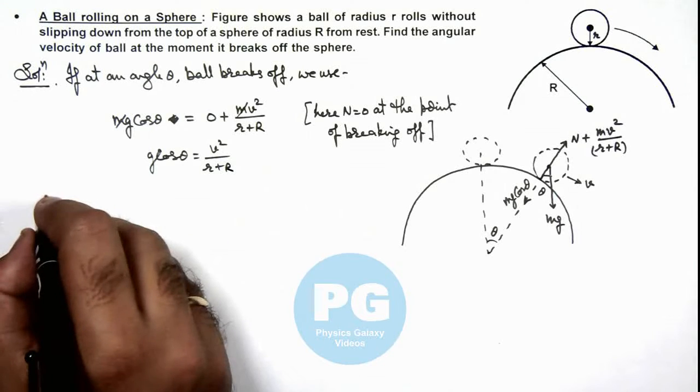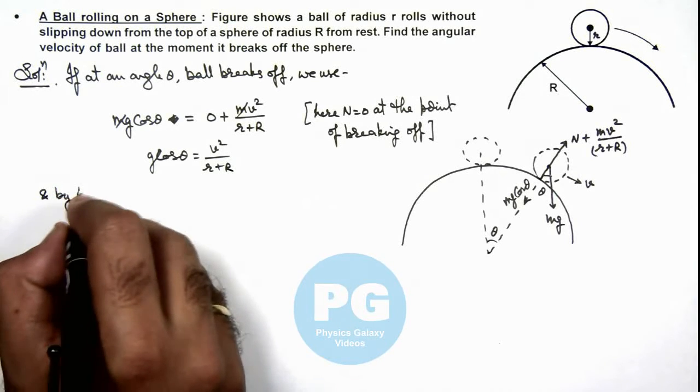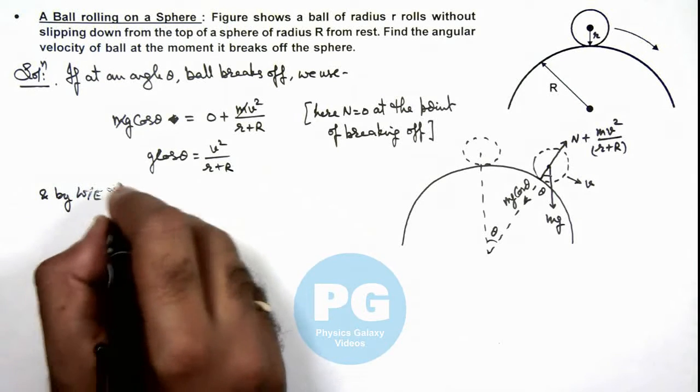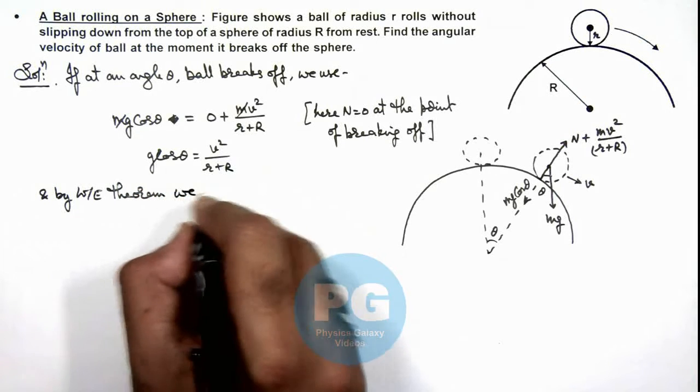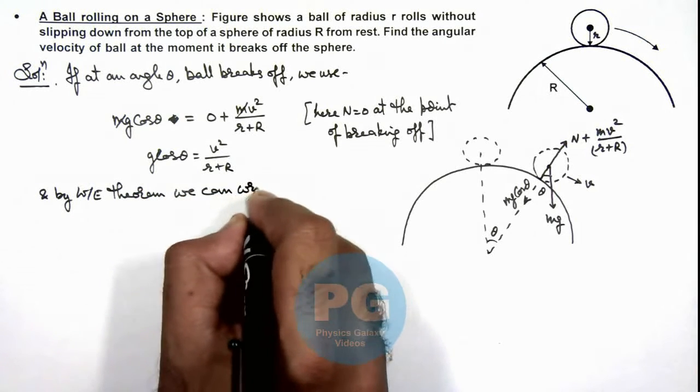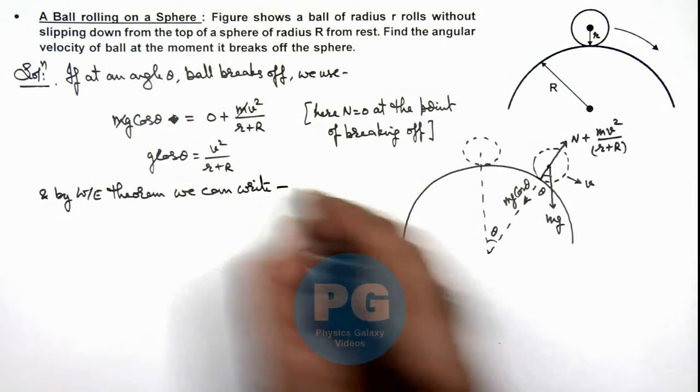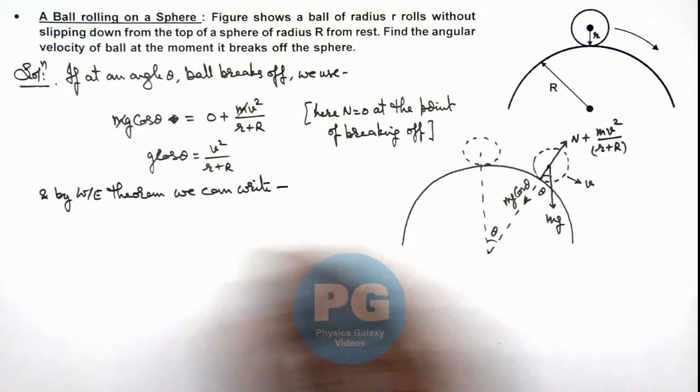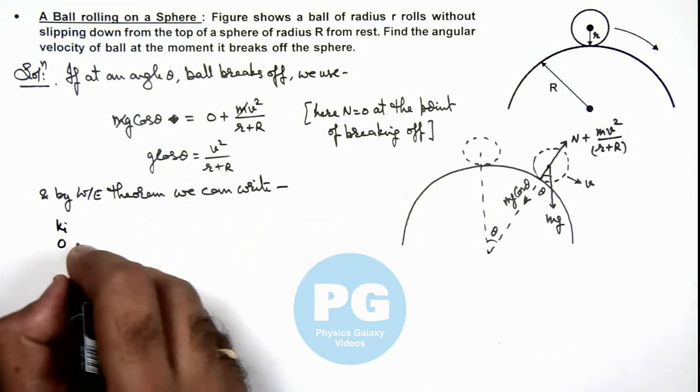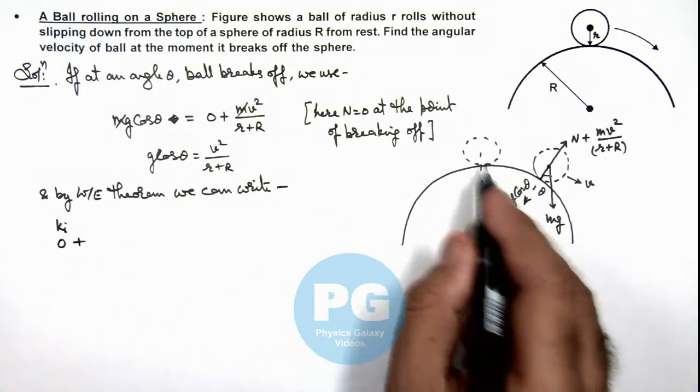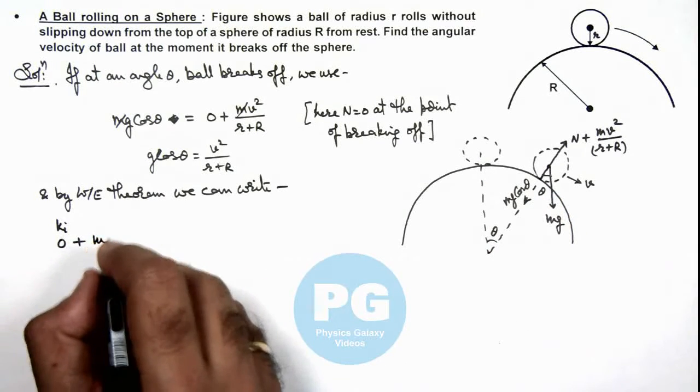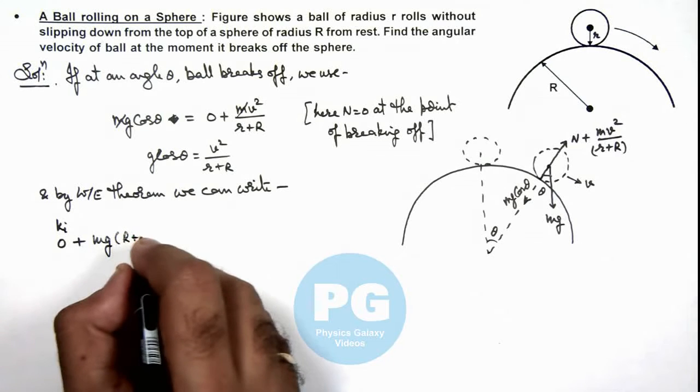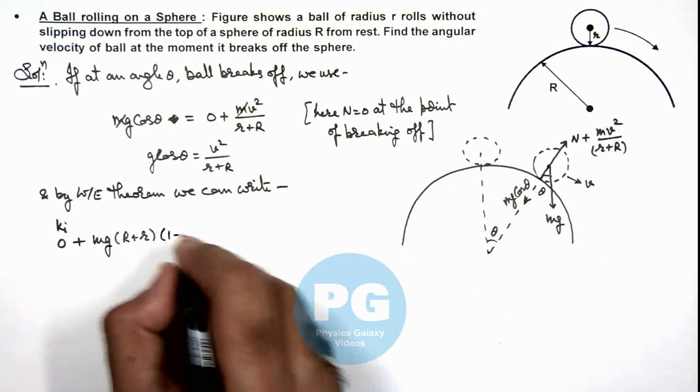By work energy theorem, from the starting point to this point we can write that initial kinetic energy of the ball was zero plus work done by gravity on the ball is mg(R+r)(1 - cos theta).